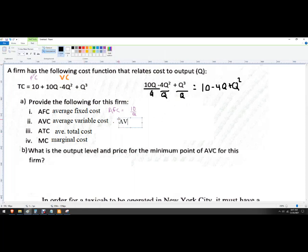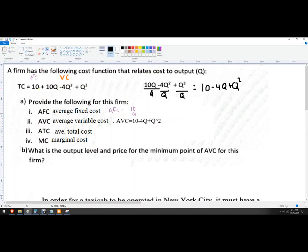And then average total cost is going to be the whole thing. So you have two options here. You could divide by Q for each term. Or since average total cost is the average fixed cost plus the average variable cost, and we already calculated those, you can add them together. So you can just take this, tack that onto the end of that function, and that gives you your average total cost.